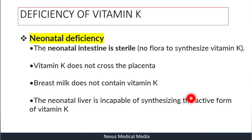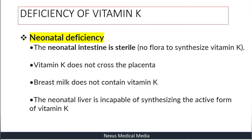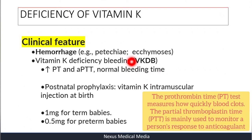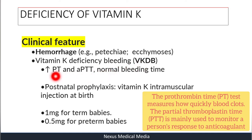Clinical features of Vitamin K deficiency include hemorrhage — for example, petechiae and ecchymosis — known as Vitamin K Deficiency Bleeding (VKDB). Lab findings show increased PT and aPTT, but the bleeding time will be normal.